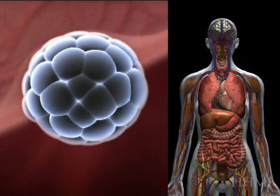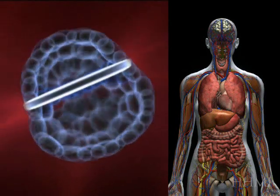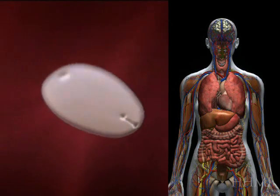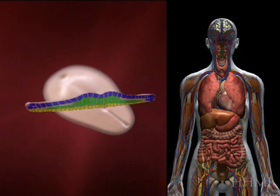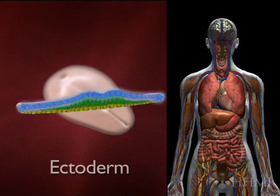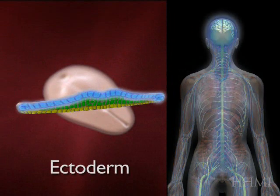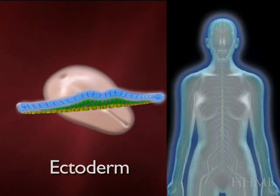If we now look at the embryo after the three germ layers have formed, this video will highlight what comes from the blue germ layer, the ectoderm. You'll see that it makes the nervous system, including the brain, and the skin.